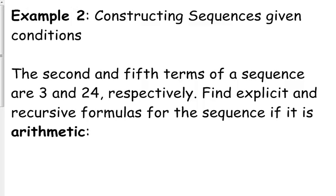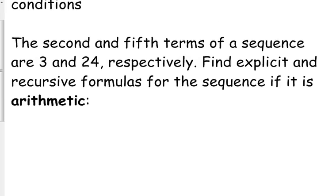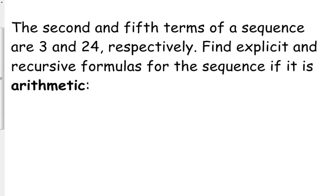We are given two pieces of information, well technically three pieces of information about a sequence. We're told the second and fifth terms are 3 and 24 of this sequence. Let's find the explicit and recursive formulas for the sequence if first of all the assumption is it's arithmetic. Let's just give ourselves a visual of what's going on here.